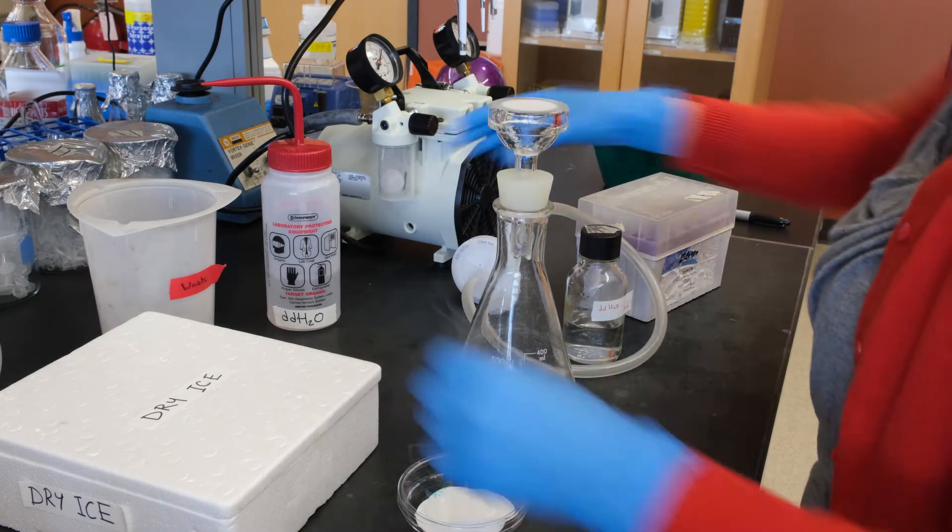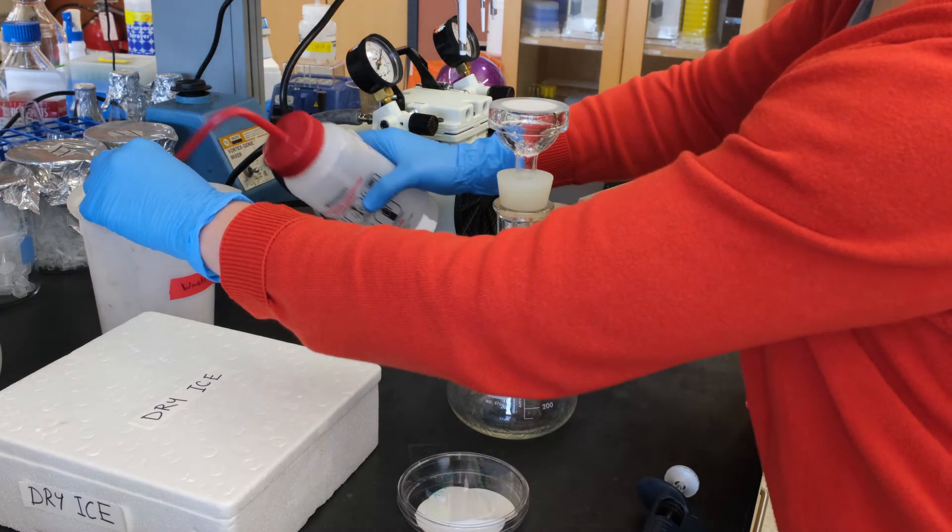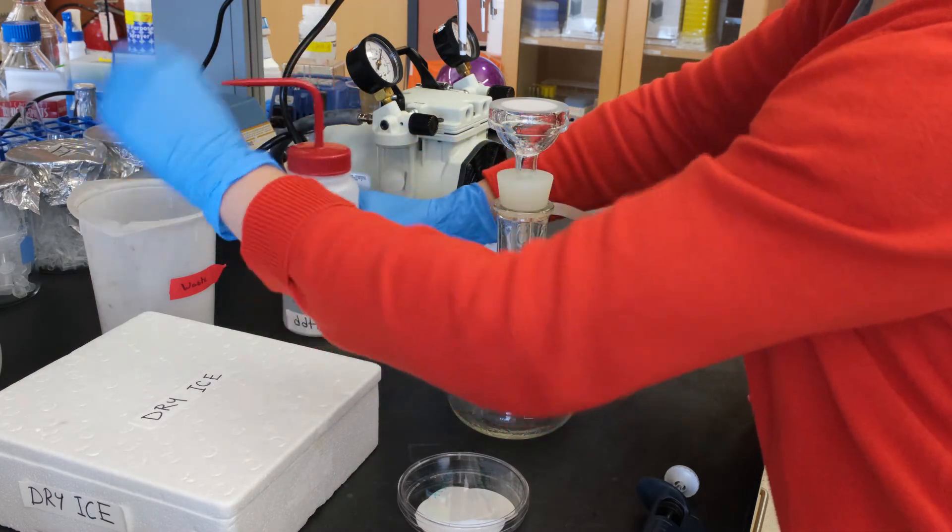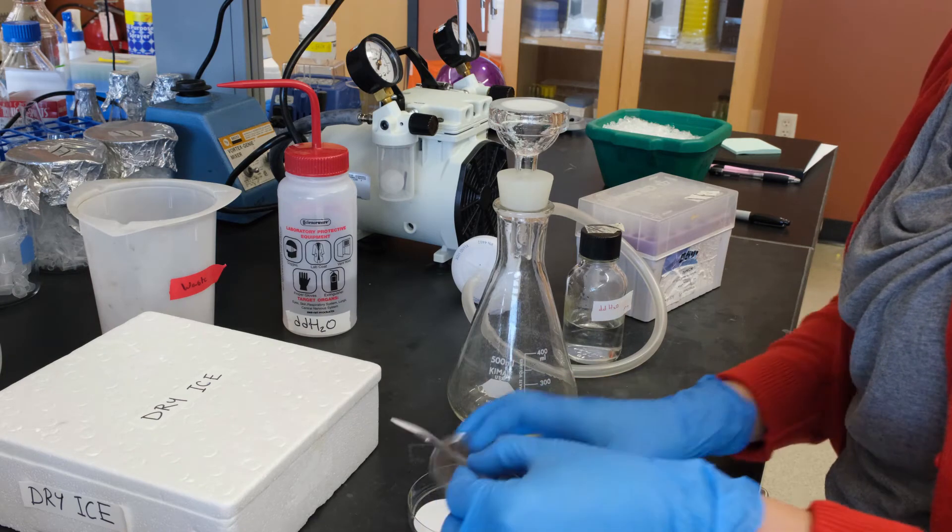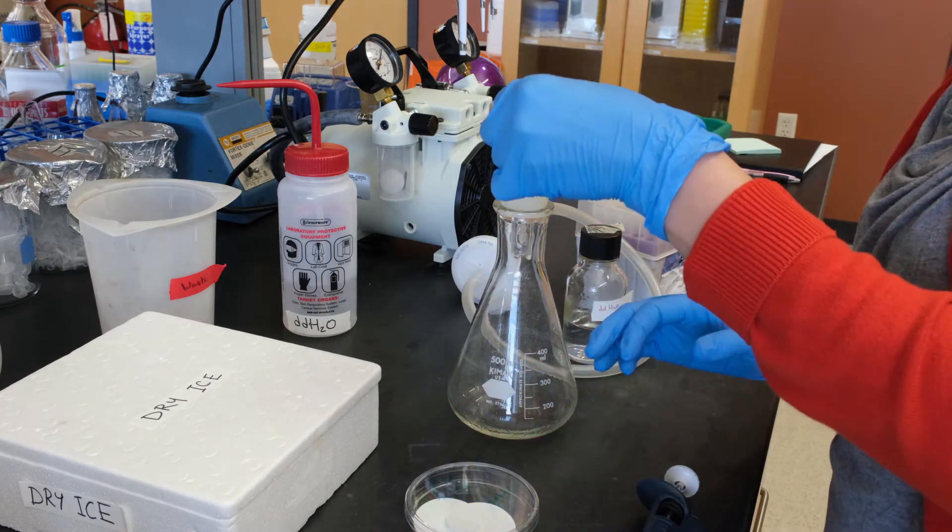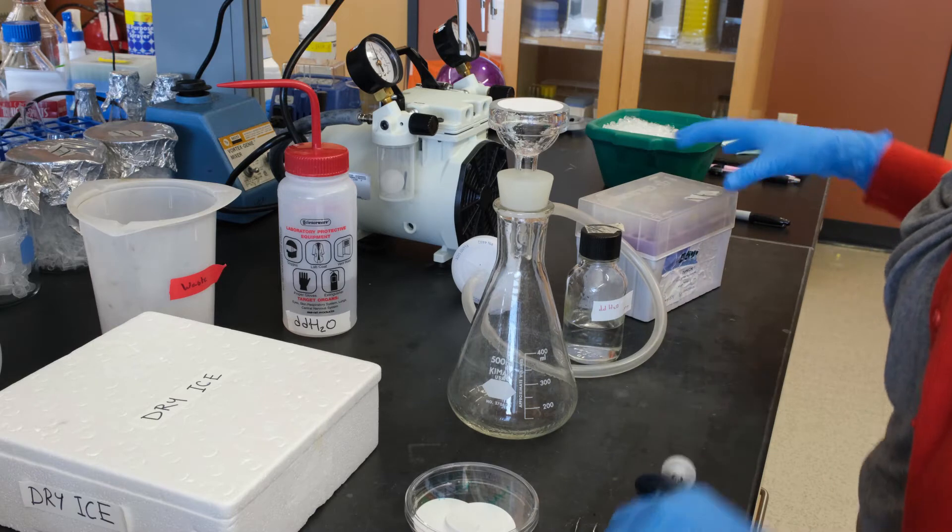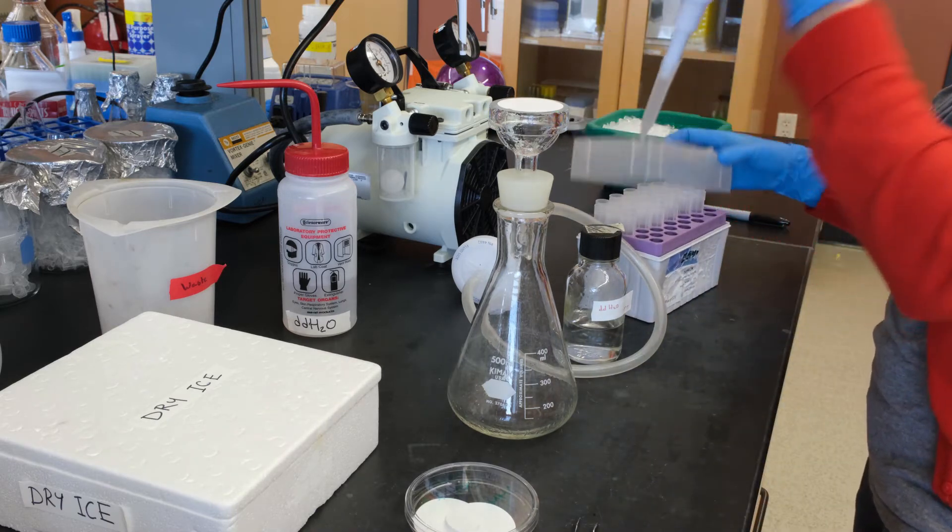Rinse your forceps and grab one filter disc. Place the filter disc on the glass funnel so that it covers the porous surface completely. Use your forceps to hold and adjust the filter as needed. Rinse the filter with deionized water and make sure that it's laying flat on the glass filter.